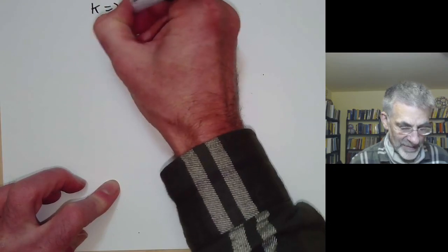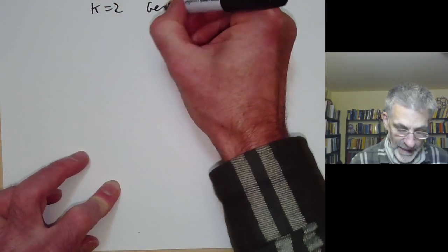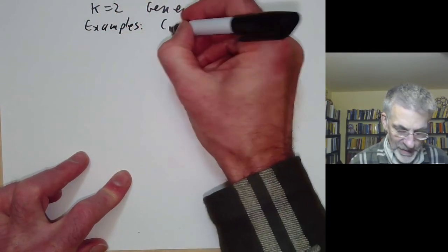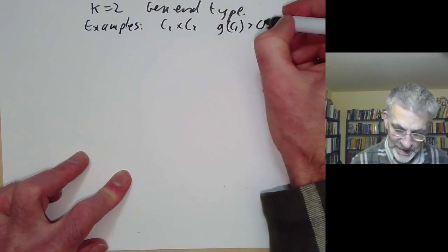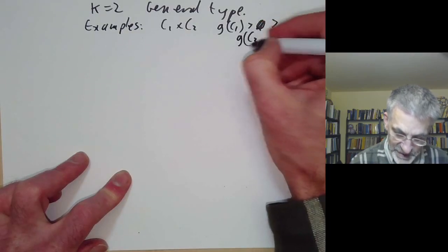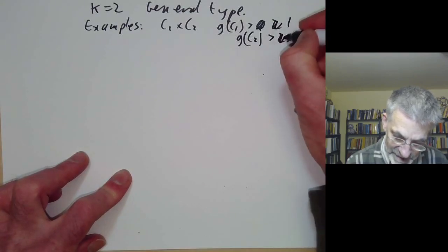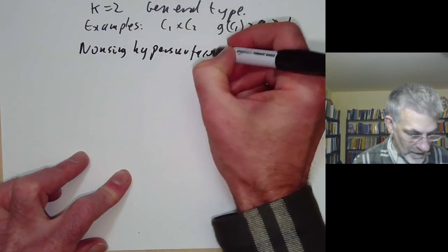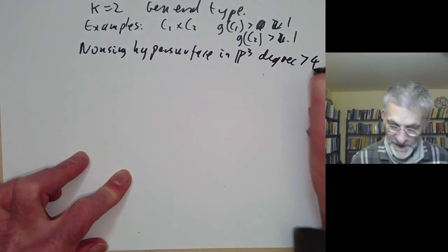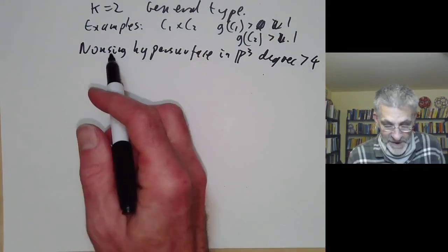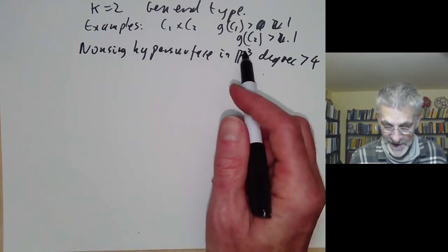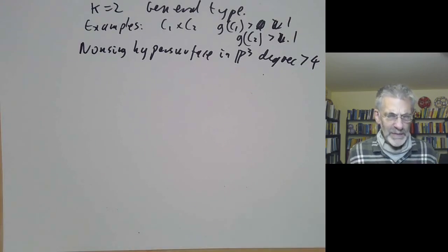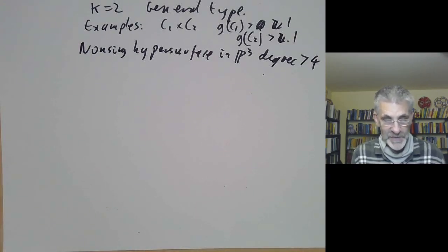Now I'll say a little about surfaces with Kodaira dimension 2, which are those of general type. Examples include a product of two curves C1 × C2 where the genus of each is greater than 1, or a non-singular hypersurface in P3 of degree greater than 4. There are huge numbers of other examples — for instance, complete intersections in high-dimensional projective space that are surfaces, and nearly all of these are of general type. There are dozens or hundreds of known constructions of surfaces of general type.